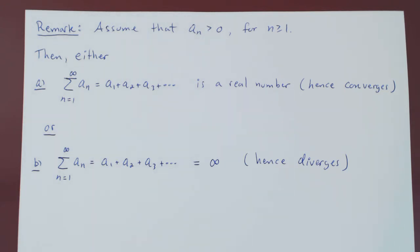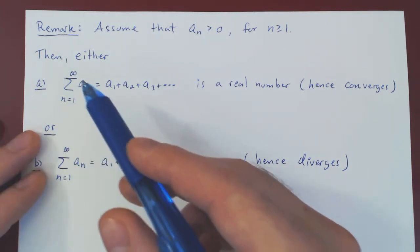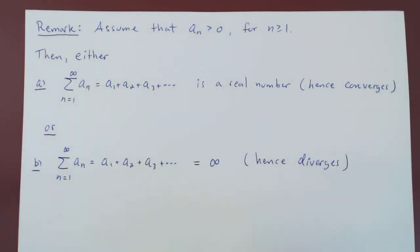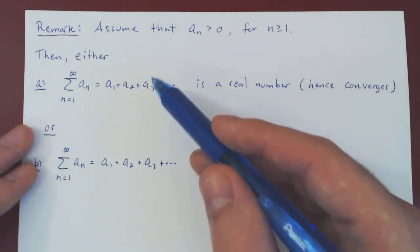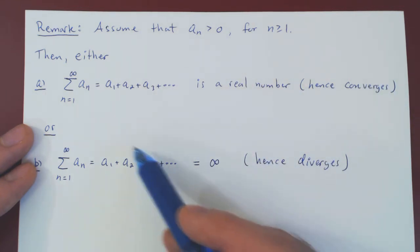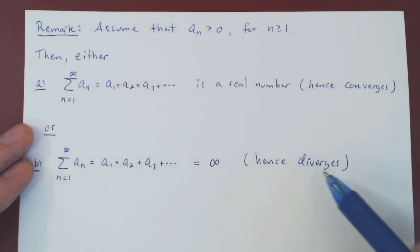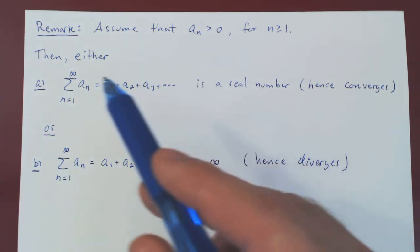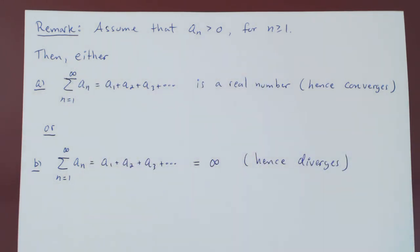So, from now on, when you consider a series of positive terms and you're asking does it converge or does it diverge, you should really just think of it as: is the series finite, therefore it converges? Or is the series infinite, therefore it diverges? And that gives you a much more intuitive understanding of a series of positive terms. And that's it.